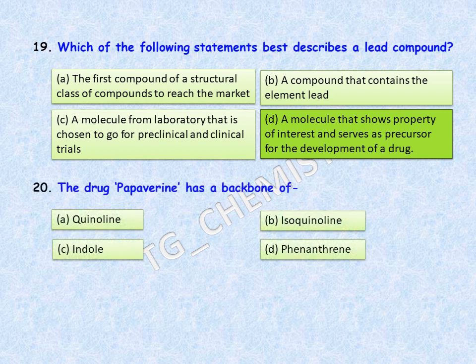The last question: the drug tapavarine has a backbone of? Options are: A, quinoline; B, isoquinoline; C, indole; D, phenanthrene. The correct answer is isoquinoline.